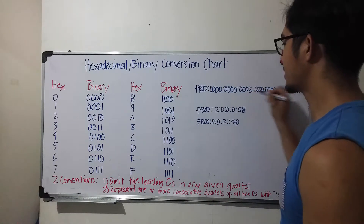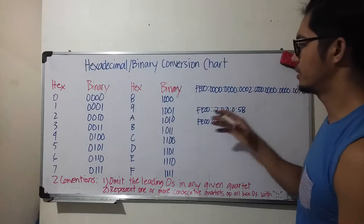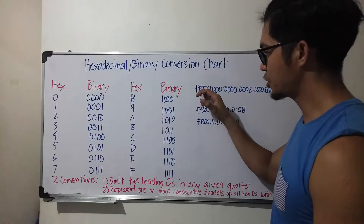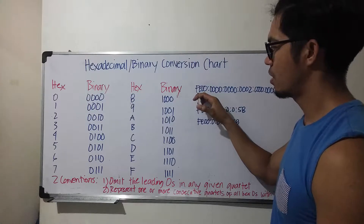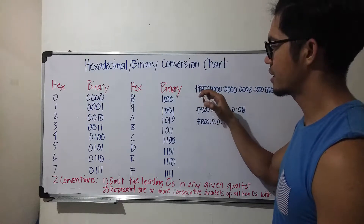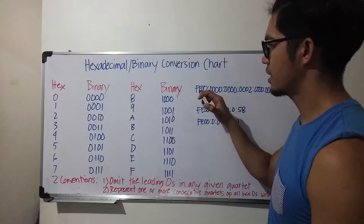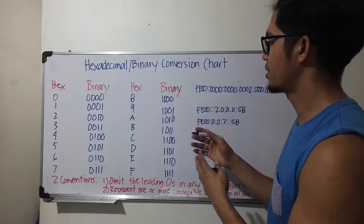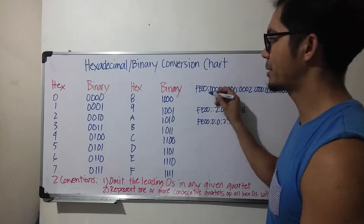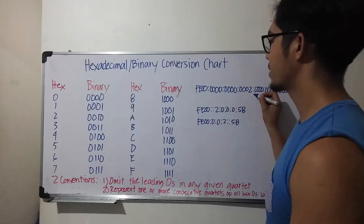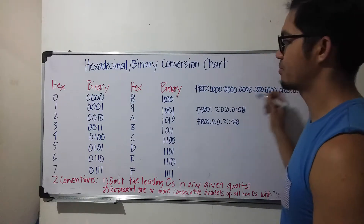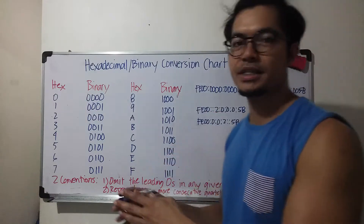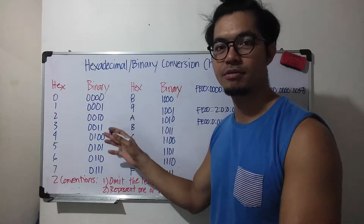For example, in this IPv6 address here, each character or digit is actually a hex number, not a decimal number. I'm going to talk about that a little later, but for now let's just focus on this chart here.